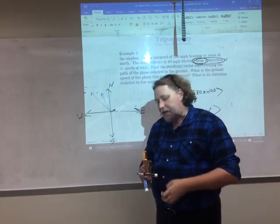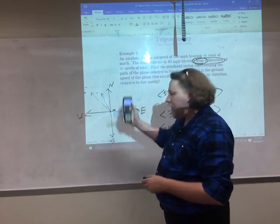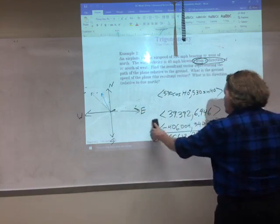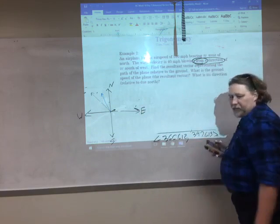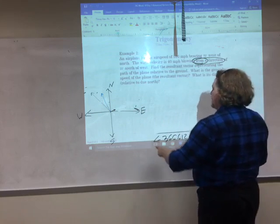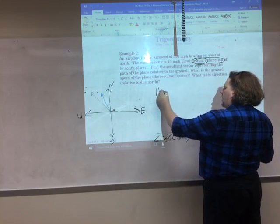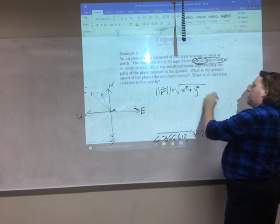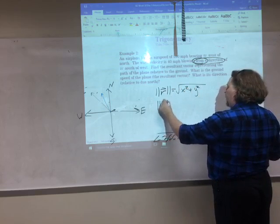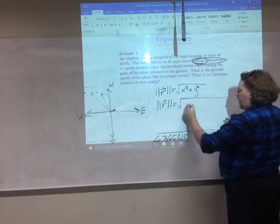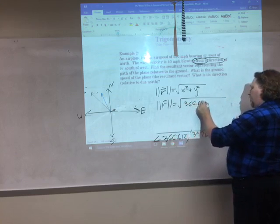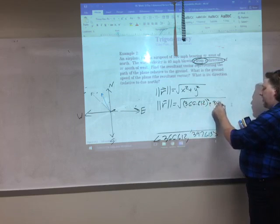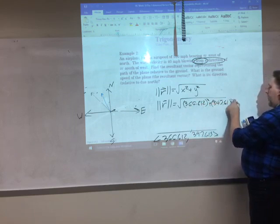Okay, now to close this out, I want to know the size or the magnitude of that direction. And I want to know its direction angle. So, first I'm going to go for magnitude. The magnitude of the result is square root of x squared plus y squared. So, the magnitude of the result is the square root of 366.612 squared. I didn't worry about the negative because squaring it's going to make the negative go away anyway. Plus, 347.613 squared.